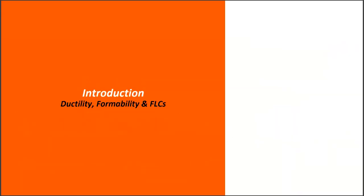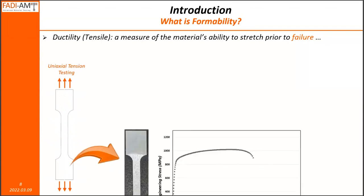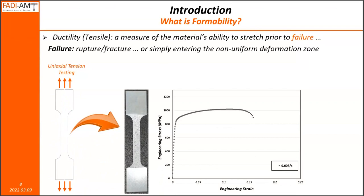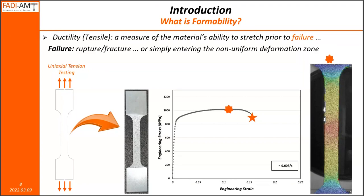Let's start with formability and a very brief introduction. To start with formability, we have to go back and define ductility. Ductility is a material property — it's a measure of the material's ability to stretch prior to failure. That definition of failure depends on the perspective. If we perform a standard tension test on a dog bone sample, we typically generate a stress-strain curve. Failure could be defined as either the point of rupture or the end of the uniform deformation zone. We could be talking about the uniform ductility or the total ductility, depending on which point is of most interest to our application.